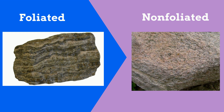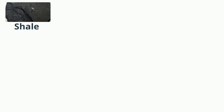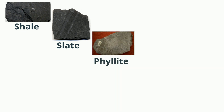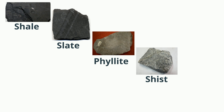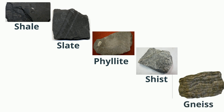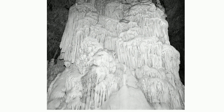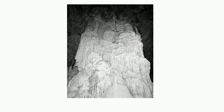Here are common examples of metamorphic rocks. Shale morphs into slate, which morphs into phyllite, which transfers into schist, which can morph into gneiss. Another common example: sandstone, when exposed to heat or pressure, morphs into quartzite, and limestone will morph into marble.